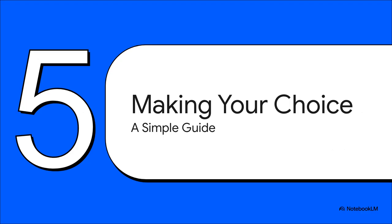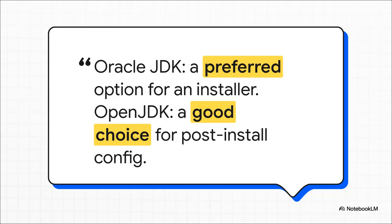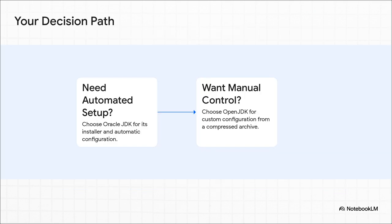So how do you actually decide? It really just comes down to one simple idea. If you want an installer that does all the heavy lifting for you, Oracle JDK is probably your best bet. But if you'd rather get your hands dirty and handle all the configuration yourself, OpenJDK is the way to go. Do you want it done for you, or do you want to do it yourself? Ask yourself: is your number one priority an easy, automated setup so you can start coding right away? If yes, Oracle JDK is for you. Or do you want complete manual control to customize your entire environment exactly how you like it? Then OpenJDK is your path.